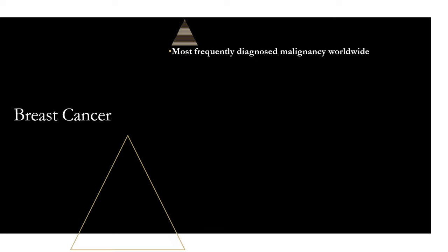Let's start with the risk factors for breast cancer, beginning with family history — this is a big one. The risk of breast cancer increases almost twofold if a woman had one first-degree relative with breast cancer, and threefold if she had two affected first-degree relatives. Next is increasing age — simply put, the older you are, the higher the risk of breast cancer.